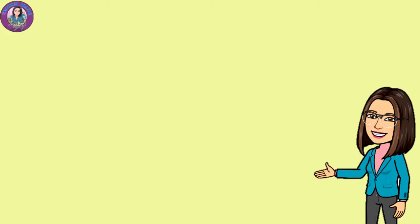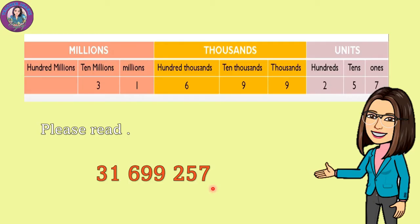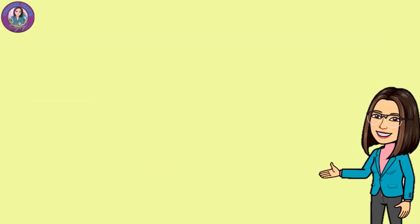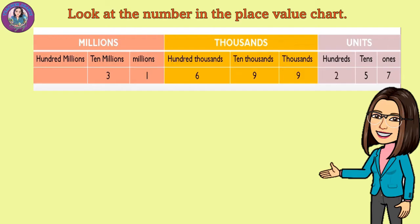Okay class, please read using this place value chart. Very good. So we have 31,699,257. Look at the number in the place value chart. In the ones place, we have seven. In the tens place, we have five. In the hundreds place, we have two. In the thousands place, we have nine. Ten thousands — nine. In hundred thousands, we have six. In millions, we have one. And in ten millions, we have three.